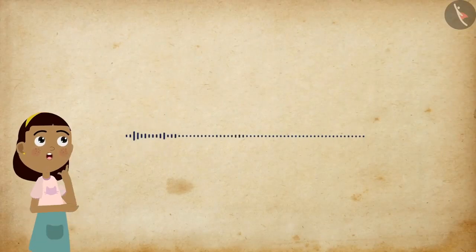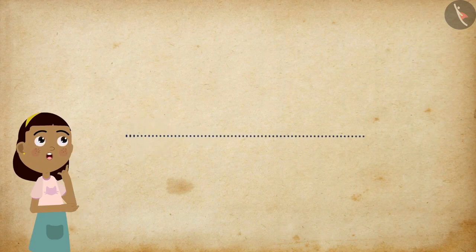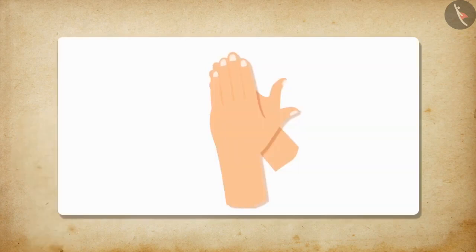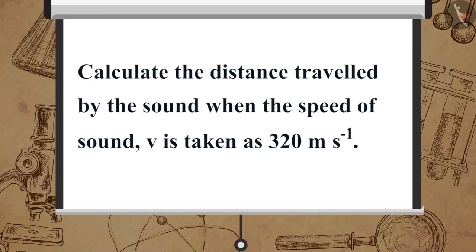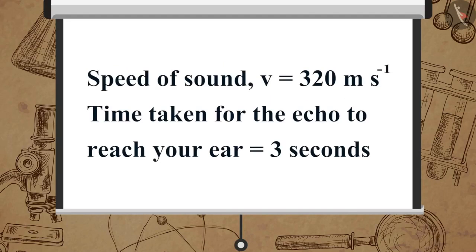Now, let us solve a simple problem together. Suppose you clapped your hands near a cliff and you heard the sound after 3 seconds. Calculate the distance travelled by the sound when the speed of sound, V, is taken as 320 meter per second. Here, speed of sound V is equal to 320 meter per second. Time taken for the echo to reach your ear is equal to 3 seconds.